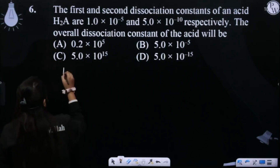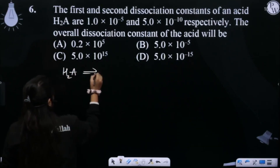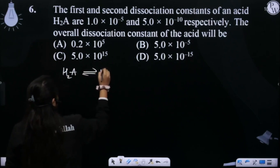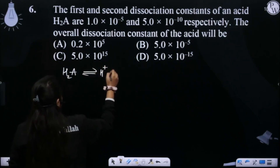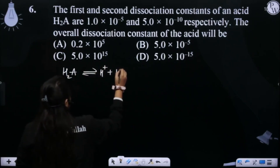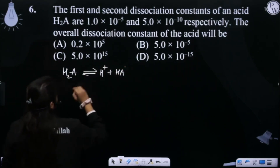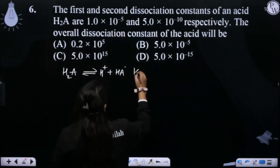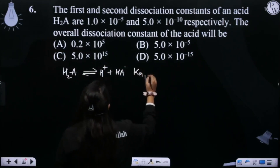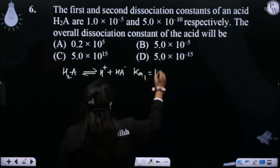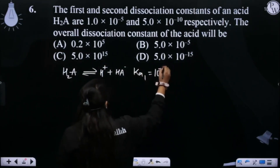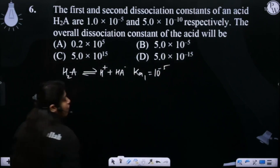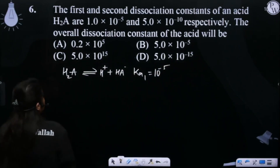That means H₂A, in the first step, gives H⁺ making HA⁻. For this step, you have a dissociation constant Ka1 = 10 to the power minus 5.